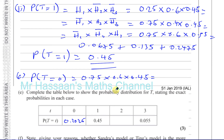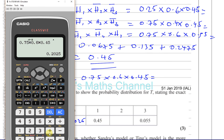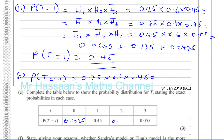Rather than working out P(T=2) directly, since all probabilities must sum to one, we can use P(T=2) = 1 − P(T=0) − P(T=1) − P(T=3) = 1 − 0.2025 − 0.45 − 0.055 = 0.2925. You can show the step by writing P(T=2) = 1 minus those three values.